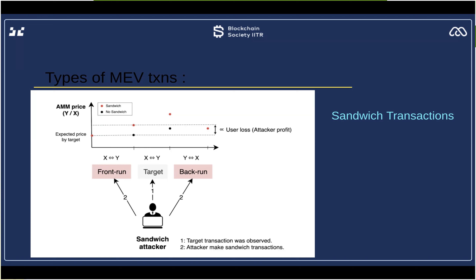Front-runners are generalized bots — the most common form of MEV. They continuously watch the mempool and detect profitable opportunities. This is the type of memory transition we're dealing with. Here is a flowchart showing a sandwich transaction.